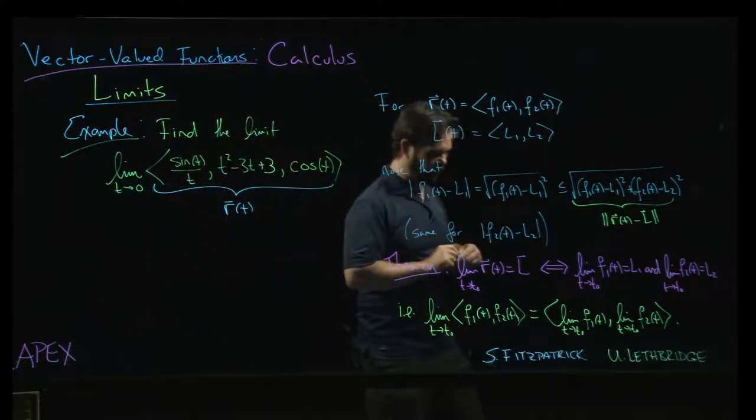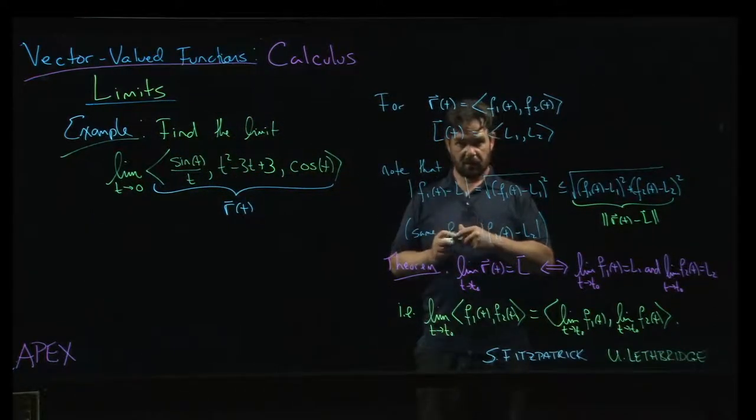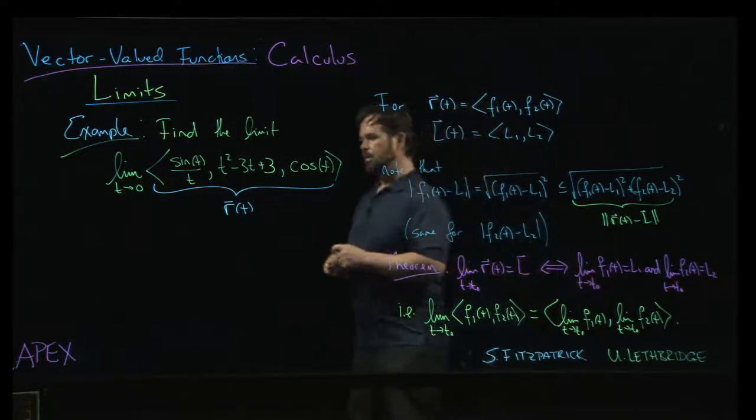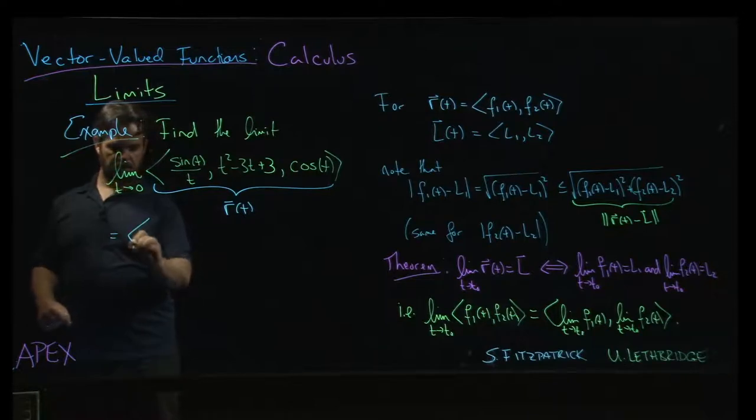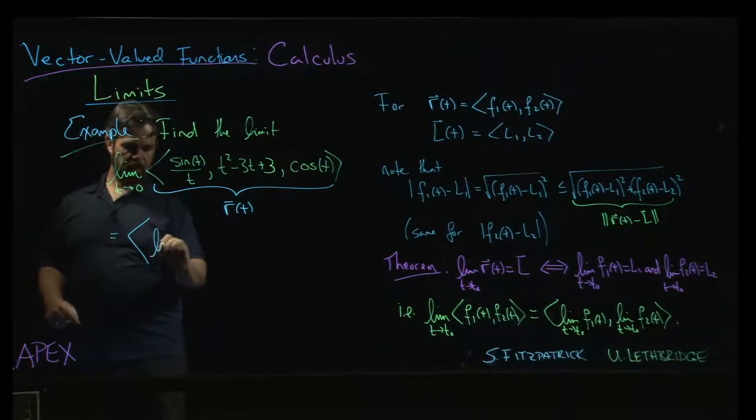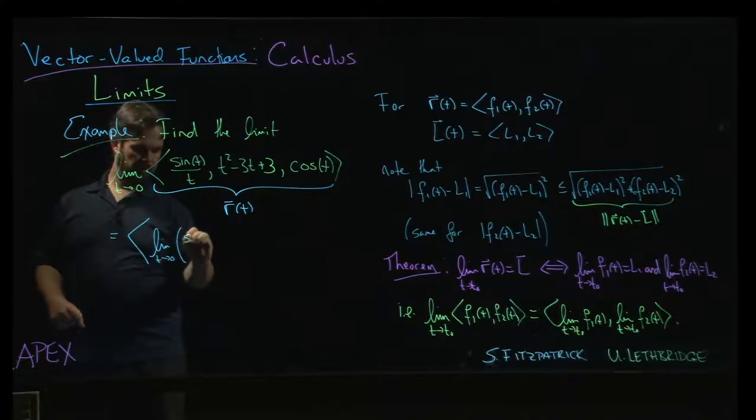And as we discussed, when you're taking limits of vector-valued functions, you can do it component-wise. So this limit is equal to the vector with components given by the limit t going to zero of sin(t) over t.